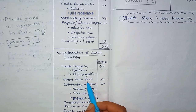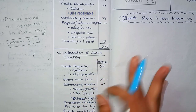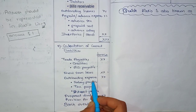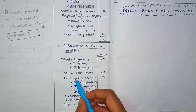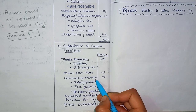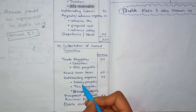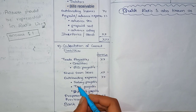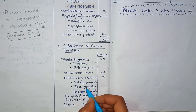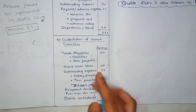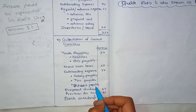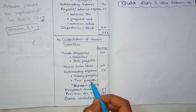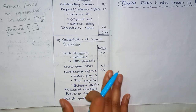Next is short-term loans. Then outstanding expenses — these are pending expenses, also called expense payable. For example, salary payable, tax payable, interest payable, outstanding tax, outstanding salary. These all fall in the liability category.